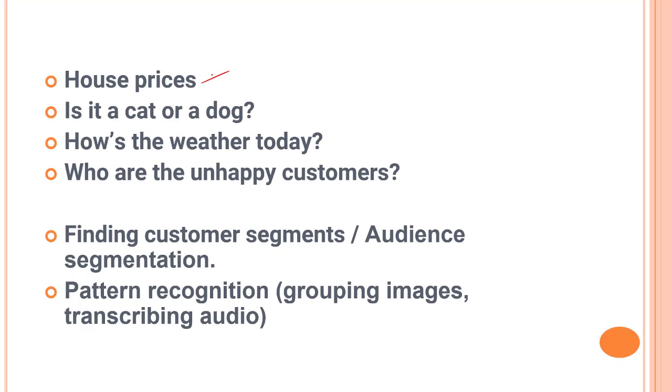Housing prices. Can you guess what kind of algorithm we use over here? Then a cat or dog classifier. Then what's the weather today? Then who are the unhappy customers? Finding customer segments, audience segmentation, pattern recognition, grouping images. Can you tell me what kind of algorithms these use?